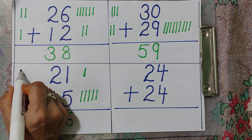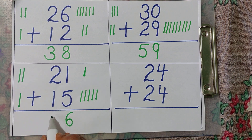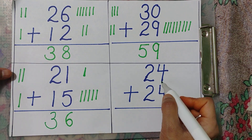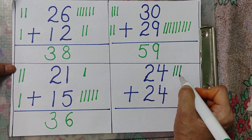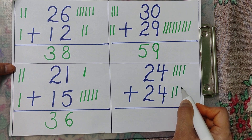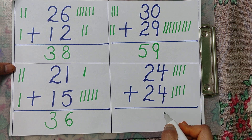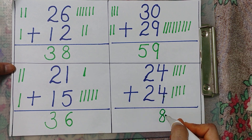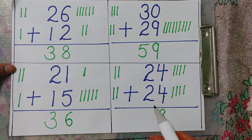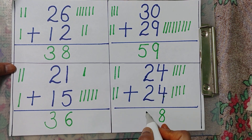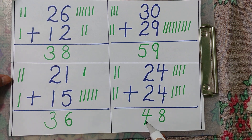Tens: two plus one. Two lines — one, two. And one — one. Total: one, two, three, four, five, six, seven, eight. Eight. Four and four — eight. Ones: two plus two — one, two; and one, two. Total: one, two, three, four. Two plus two: four. Answer is forty-eight.